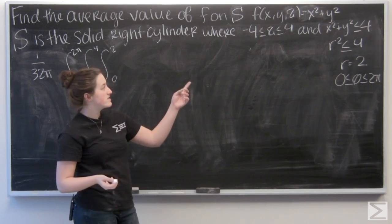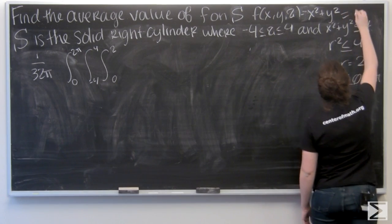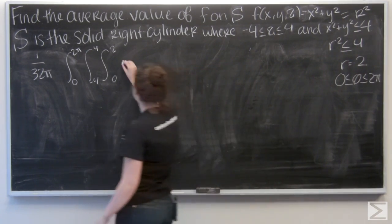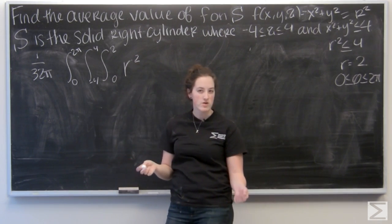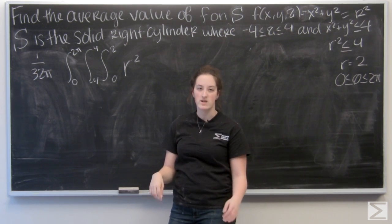Now my function here is x squared plus y squared. But since I'm in cylindrical coordinates, I'm going to change that to r squared. Now I just need my dv for the integral. Remember in cylindrical coordinates, the dv is r dr dz d theta.